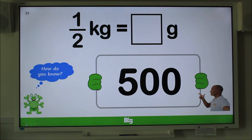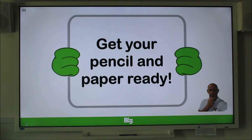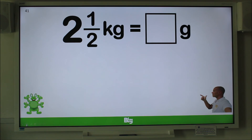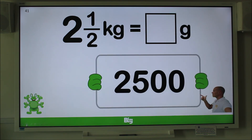Okay, let's make it a little harder. Have your pencil and paper ready — here comes question 4. Convert 2 and a half kilograms into grams. Remember to pause the clip and write down your answer. Did you make it 2,500? Did you remember that 1 kilogram equals 1,000 grams and half of a kilogram equals 500? Well done.